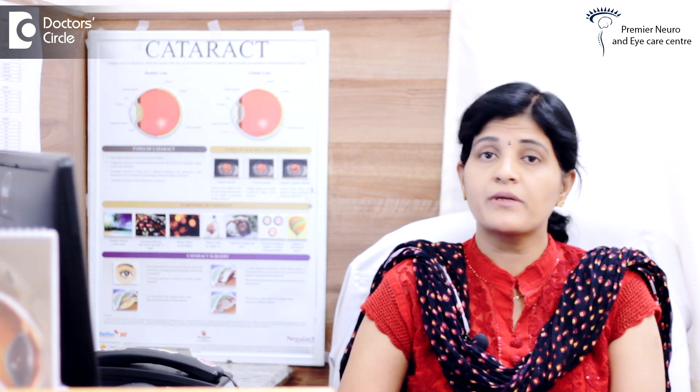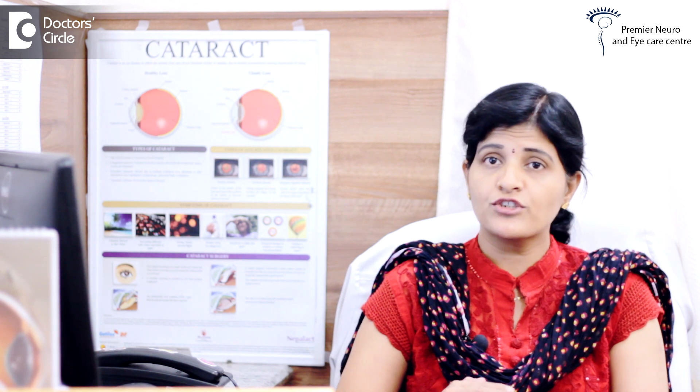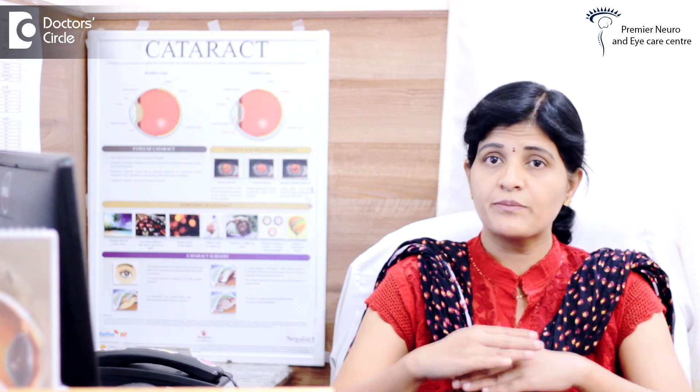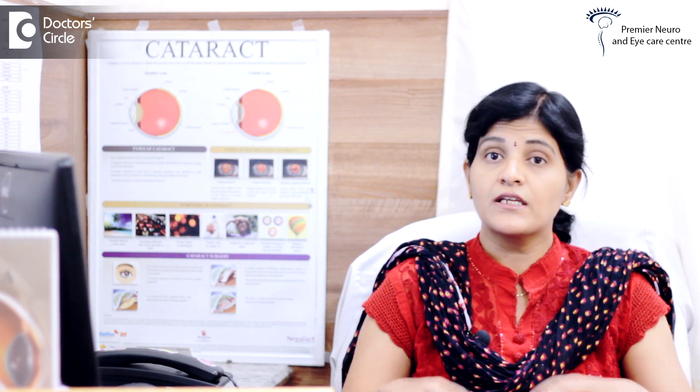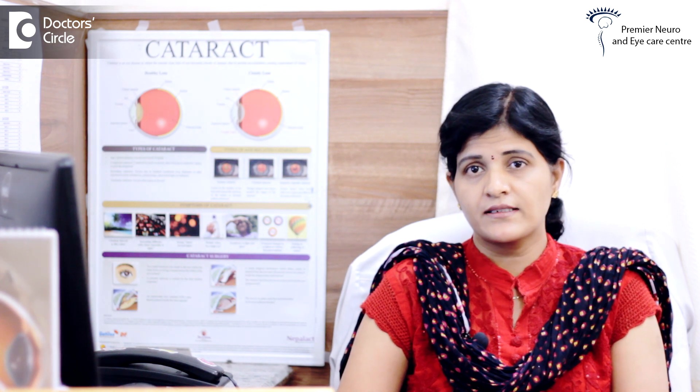If the central stroma is ablated, then the cornea becomes flat. A flat cornea corrects the myopia. When we flatten the peripheral or the paracentral area, the central portion of the cornea steepens and the peripheral flattens — here the hypermetropia is corrected.